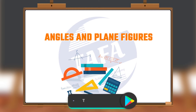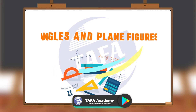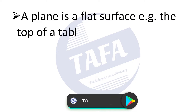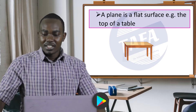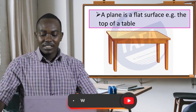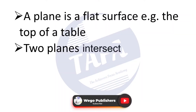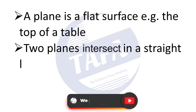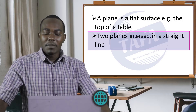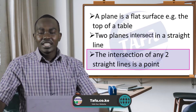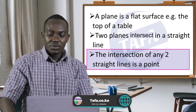A plane figure is a flat surface — for example, the top of a table is a flat surface, therefore it's a plane figure. Two planes intersect in a straight line, or in other words, two planes meet in a straight line. The intersection of any two straight lines forms what we call a point.